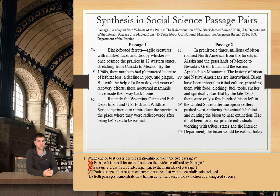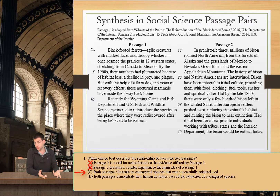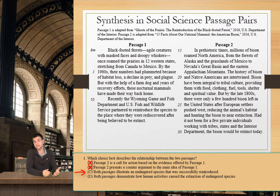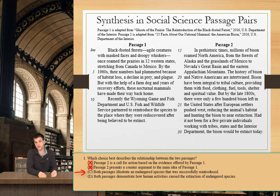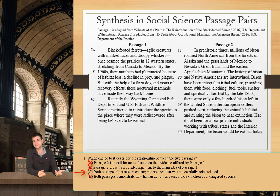Choice C says that both passages illustrate an endangered species that was successfully reintroduced, and that seems like a pretty good answer. It hits on all the main points — both provide an example of a species that nearly went extinct and was later successfully reintroduced. Choice D tells us that both passages demonstrate how human activities caused the extinction of endangered species. However, the species discussed never actually went extinct, so D can easily be eliminated. That leaves us with C, which is the correct answer.